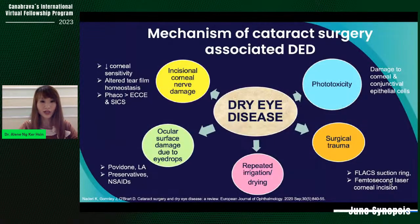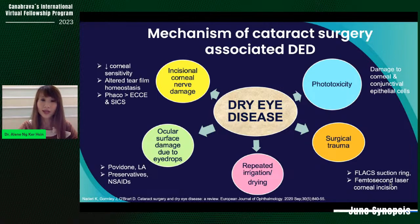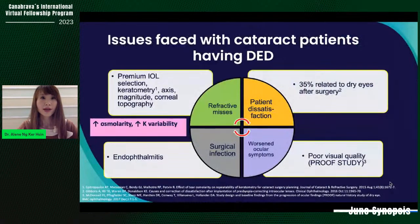Corneal nerve transection in cataract surgery can reduce corneal sensitivity, altering tear film homeostasis. Reduction in corneal sensitivity is proportionate to the length and depth of incision and is influenced by additional corneal procedures like LRIs and arcuate keratotomies. Phacoemulsification with the smallest incision size has significant advantage over both classic ECCE and SICS. Long duration of microscopic light exposure causes phototoxicity. Other intraoperative factors include surface toxicity induced by irrigating fluids, topical anesthetics, preservatives and antibiotics.